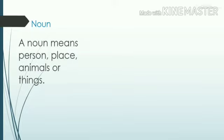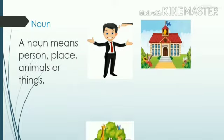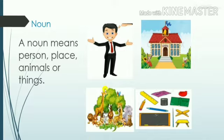Let's see the definition of noun. A noun means person, place, animals, or things. Yahaan pe show nouns hotay hain jisse haam naam dete hain. Jaisi yaha insaan hai, iska naam hoga. Yhe jo place hai iska bhi naam hai — school. Animals, yhe sare animals ki name hai. Aur yhe jo things hai, iska bhi sare cheezo ke naam hai. Jaisi scale, pencil, blackboard, etc.